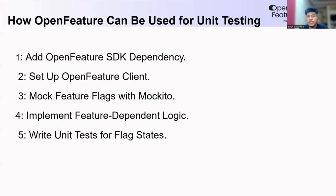How can Open Features be used in unit testing? Open Features provides various SDKs to test these features — Java SDK, Go SDK, and React SDK. These SDKs can be used in your application to leverage Open Features for unit testing. The steps are: set up the Open Features client, mock the feature flags, implement the features, and write unit tests for the flag management.